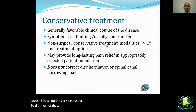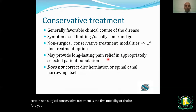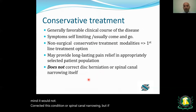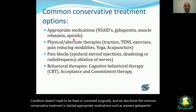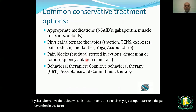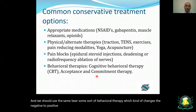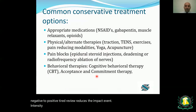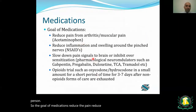Most conditions have a favorable clinical course, so non-surgical conservative treatment is the first modality of choice and may provide longer-lasting relief in appropriately selected populations — though it will not correct disc herniation or spinal canal narrowing. Conservative treatment includes appropriate medications such as NSAIDs, gabapentin, muscle relaxants, and opioids; physical and alternative therapies such as traction, TENS, exercises, yoga, and acupuncture; pain interventions such as epidural steroid injection and ablation; and behavioral therapy to reduce the impact of pain and improve functional well-being.